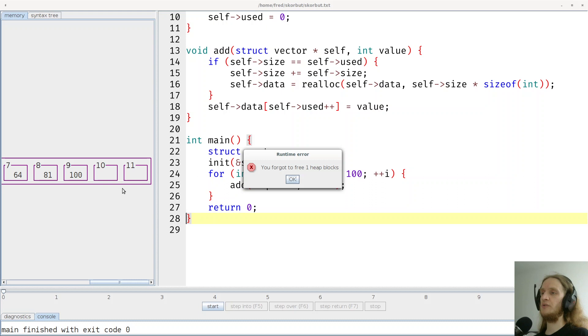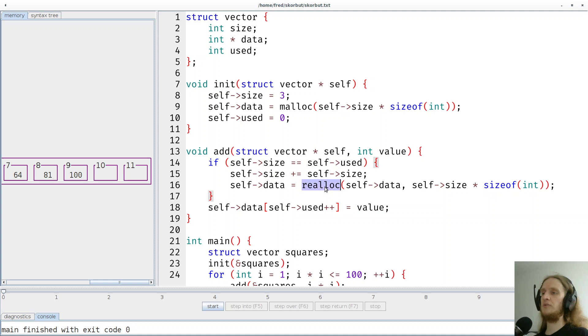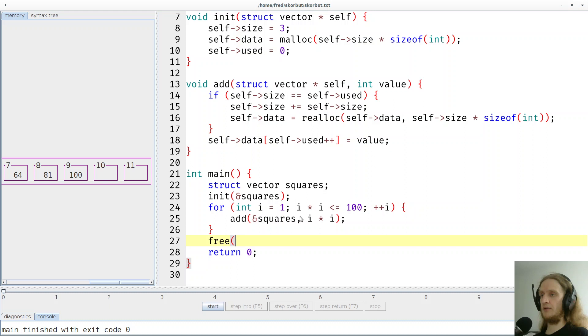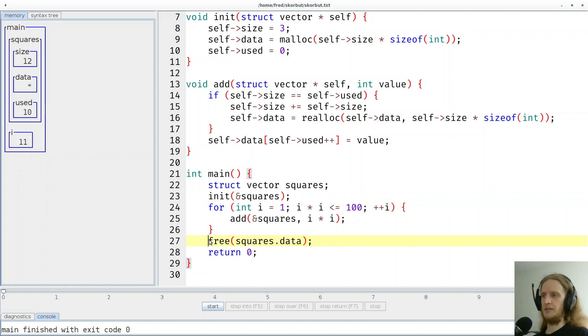You forgot to free one heap blocks. So there's a general rule that says memory that was allocated via malloc and reallocated via realloc has to be freed explicitly by the programmer because C has no garbage collection. So we could simply say, we are done using the array. Let's simply say free squares dot data. That would work. Let me quickly show you that the error message is now gone and the array was freed. But that's not really good style because the malloc was encapsulated in the init function, as you can see here.